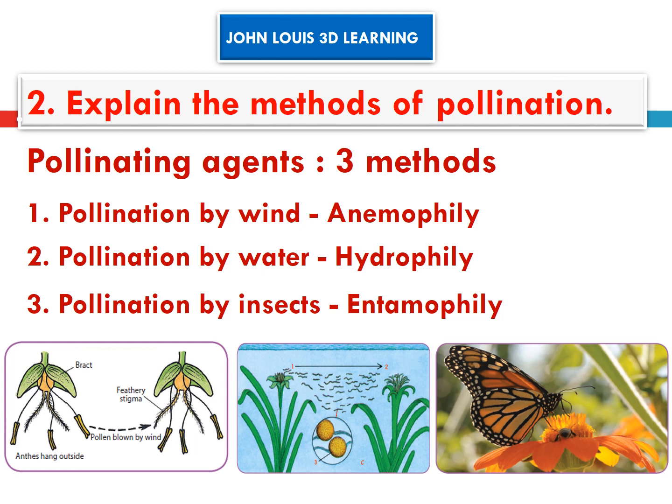Now we will explain the methods of pollination: what is pollination, and the types of pollination — self-pollination and cross-pollination — and then the three methods of pollination: anemophily, hydrophily, and entomophily.